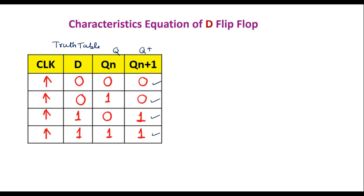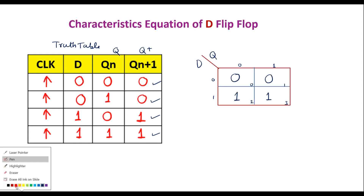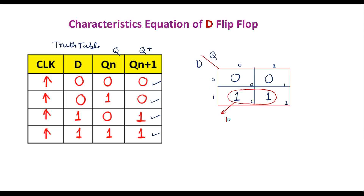We have two variables, D and Qn, so we need a 4-cell K-map. Cell 0 (D=0,Q=0)=0; Cell 1 (D=0,Q=1)=0; Cell 2 (D=1,Q=0)=1; Cell 3 (D=1,Q=1)=1. Cells 2 and 3 form a pair, and the value of this grouping is D. Therefore, Qn+1 = Q+ = D. The output follows the input — the next state of the D flip-flop equals the input.